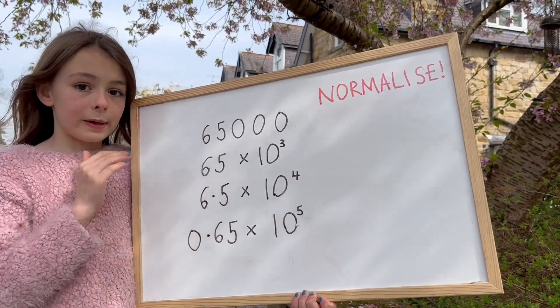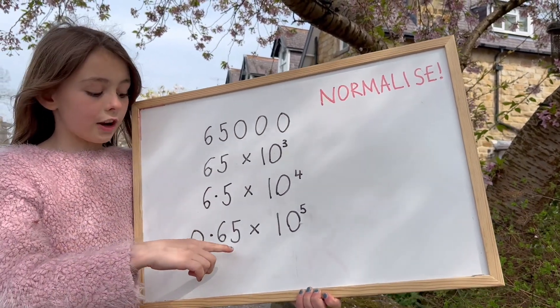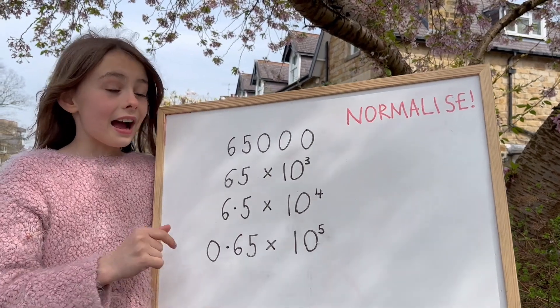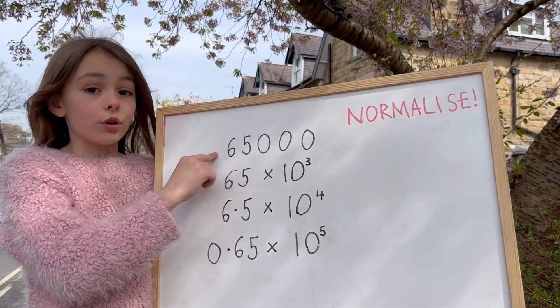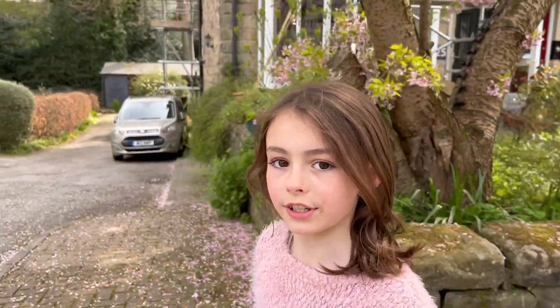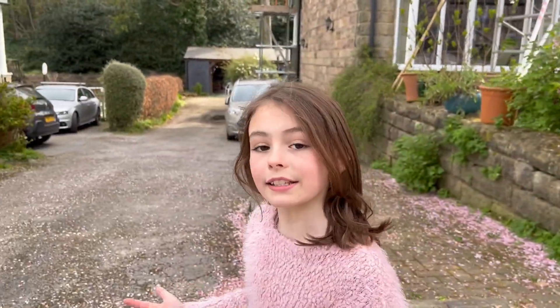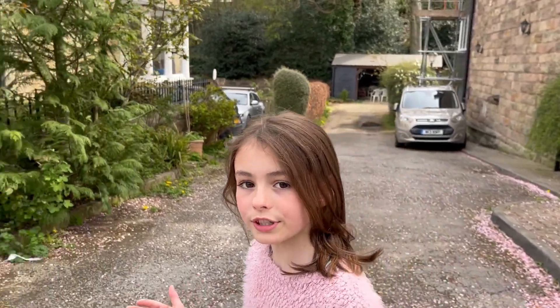So 6.5 is between 1 and 10, 0.65 is too small and these two are too big. There are other types of scientific notation such as engineering notation, but normalized standard form will get you through most situations.